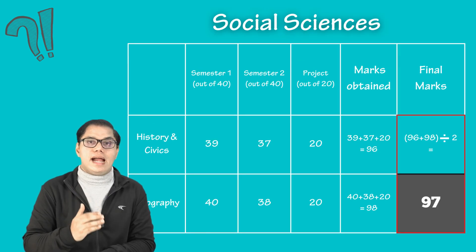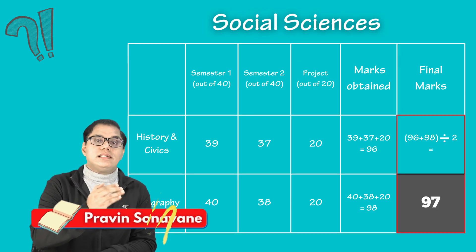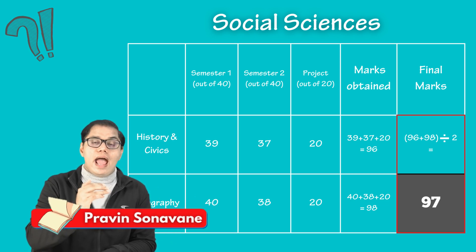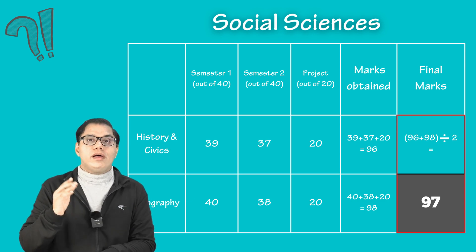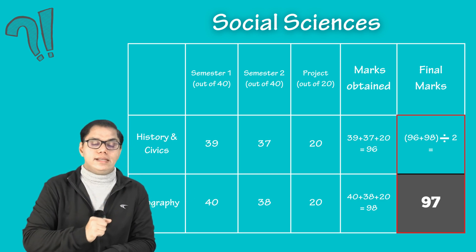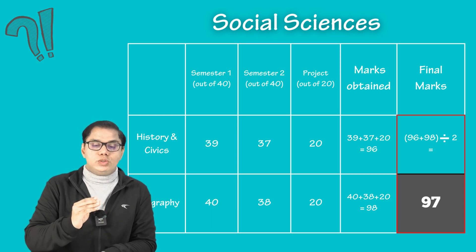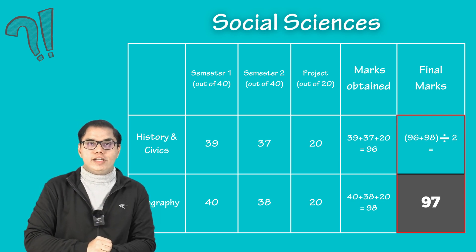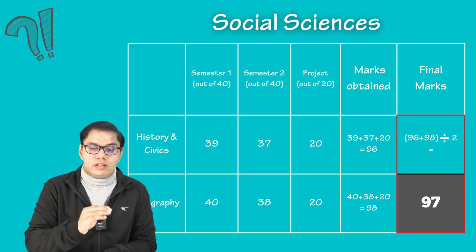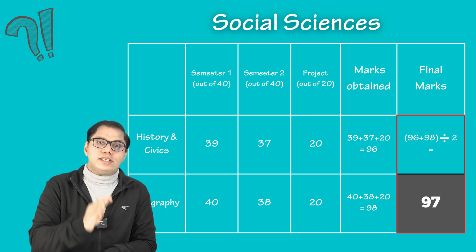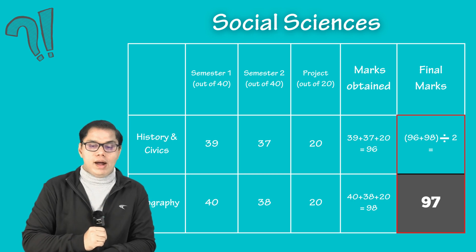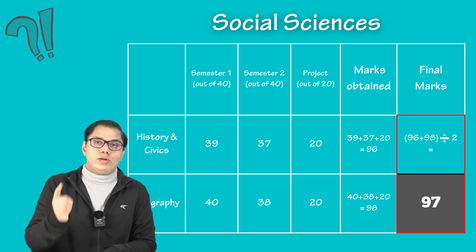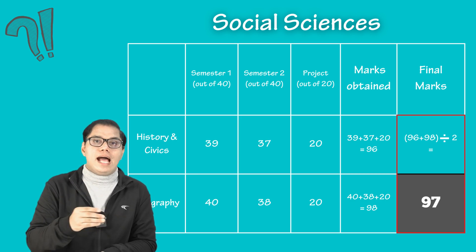Moving on to next subject that is social sciences. Like English language and English literature, here for social sciences, average of history civics and geography will be taken. Let us take the example. In semester one, this student has scored 39 out of 40 in history and civics paper. And in semester two, 37. Project work, he has scored full 20 marks. His total for history and civics is 96. We will come back to this 96 marks later on.